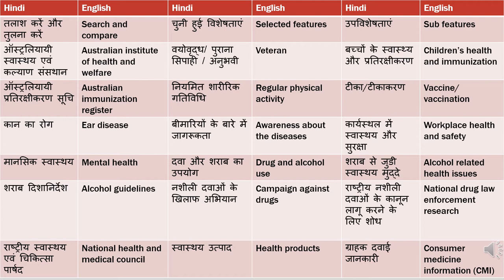'Bachchon ke swastya aur pratirakshikaran' means children's health and immunization. 'Pratirakshan' is immunity and 'pratirakshikaran' is immunization. This also relates to the Australian immunization register.